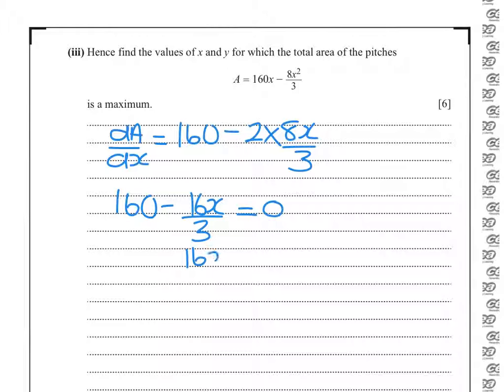So I want to know when 16x over 3 equals 160. Dividing both sides by 16, x over 3 equals 10, so x equals 30.